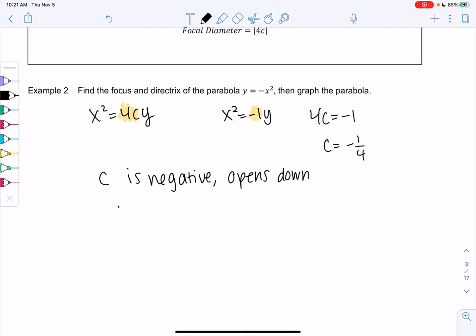All right, so now we also know the focus is at (0, negative 1 fourth) because c is negative 1 fourth. And then the directrix is just the opposite. So the directrix would be positive 1 fourth. So directrix is a line and it's the opposite. It's positive 1 fourth. Cool. So we found the focus. We found the directrix. We're just going to graph.